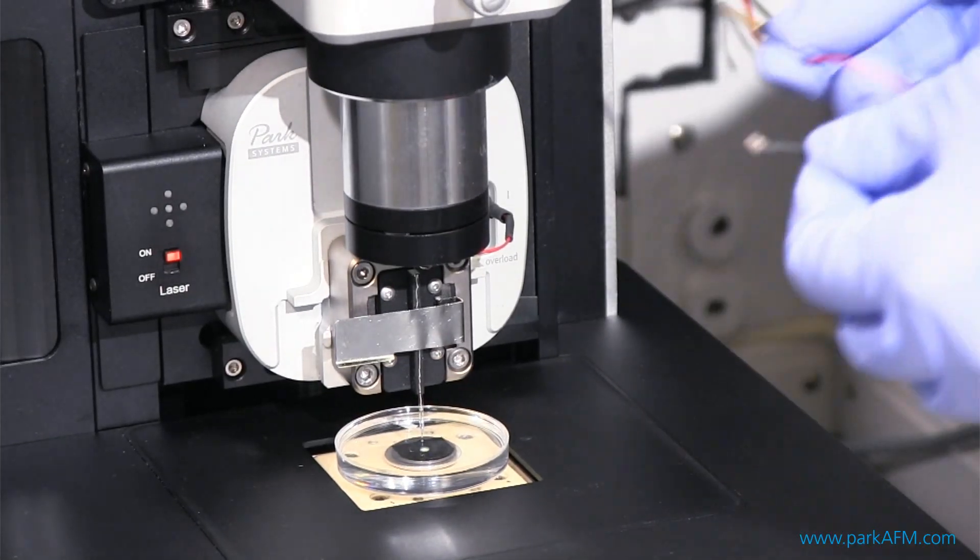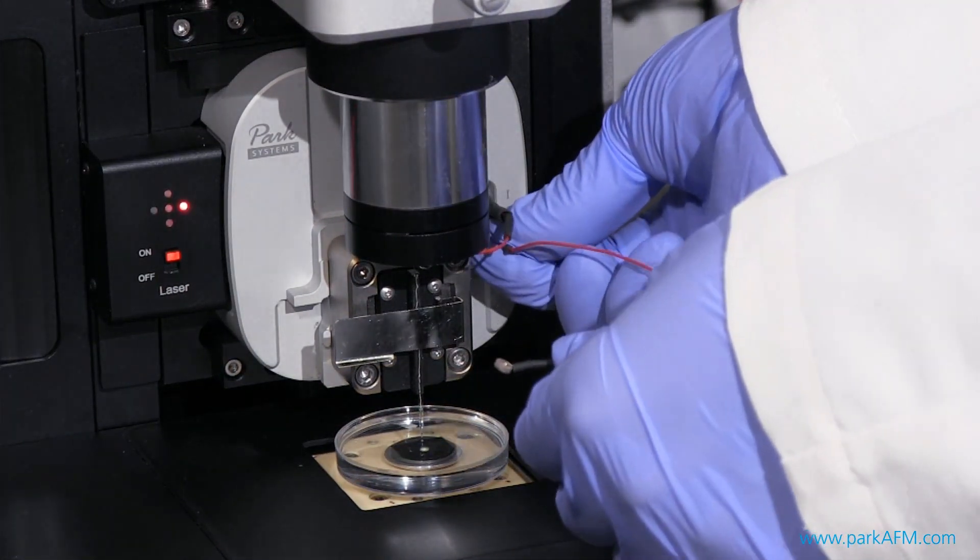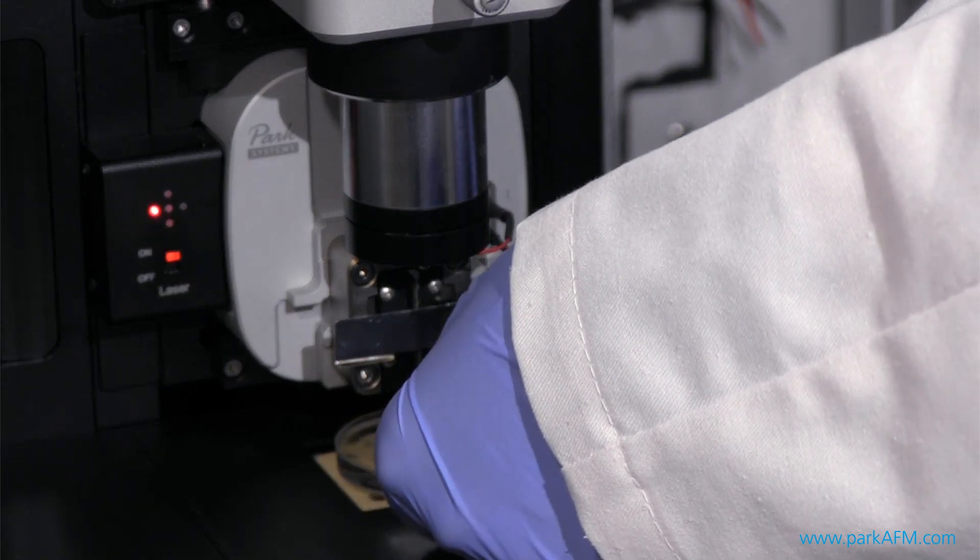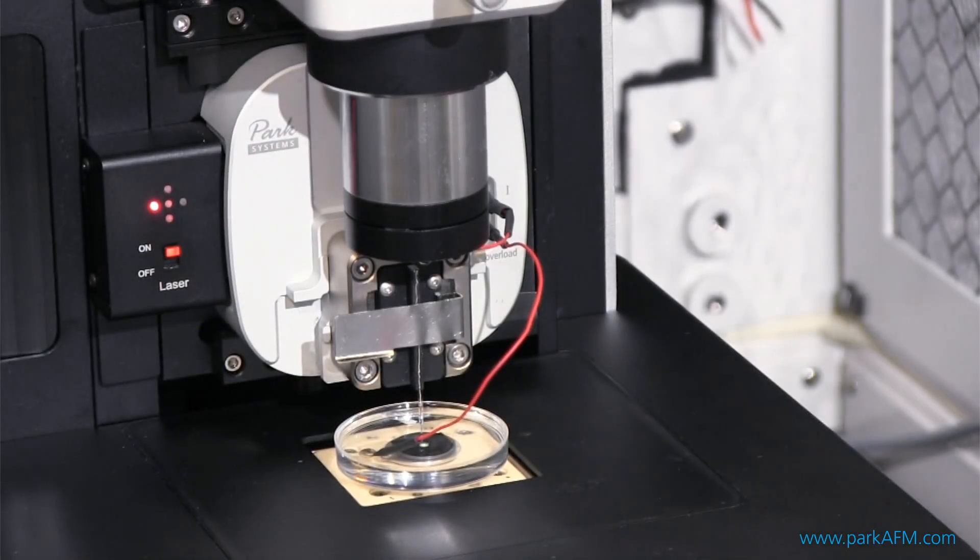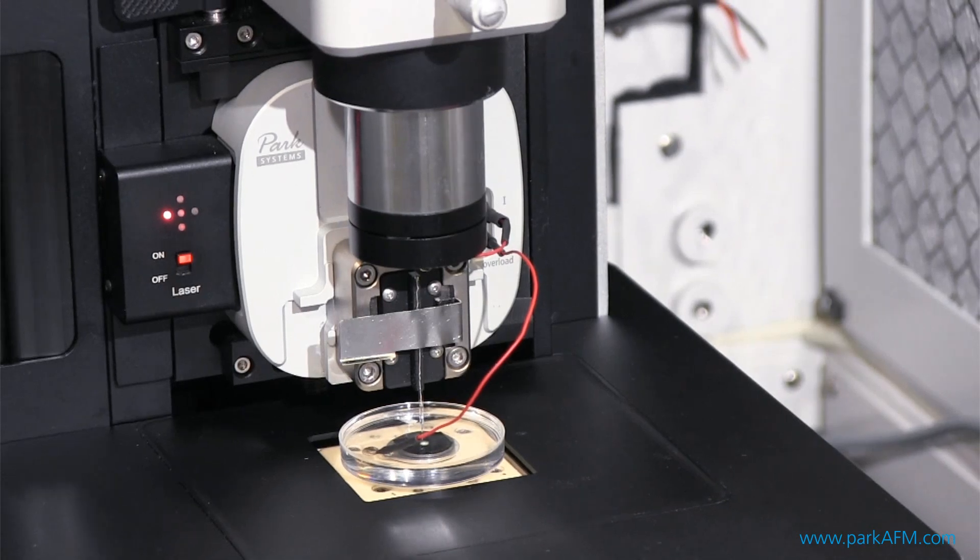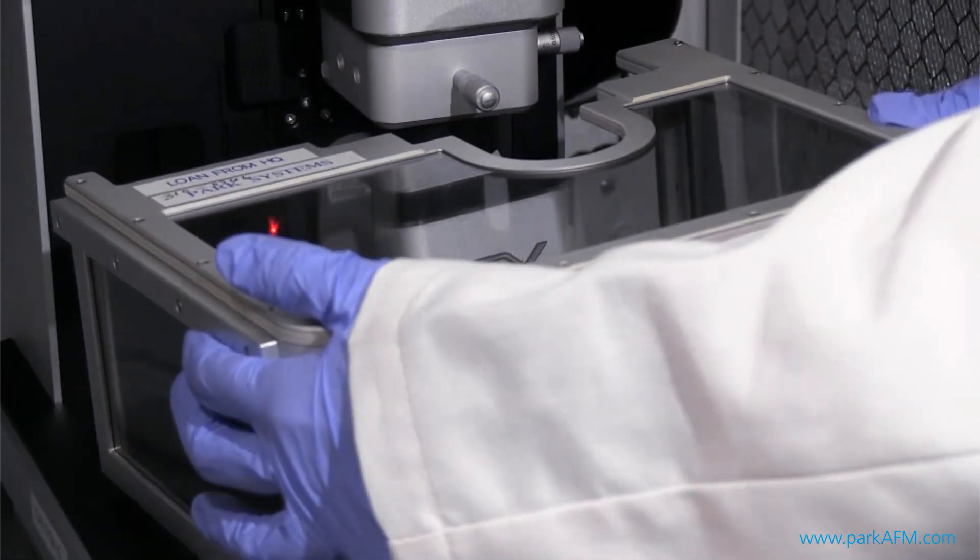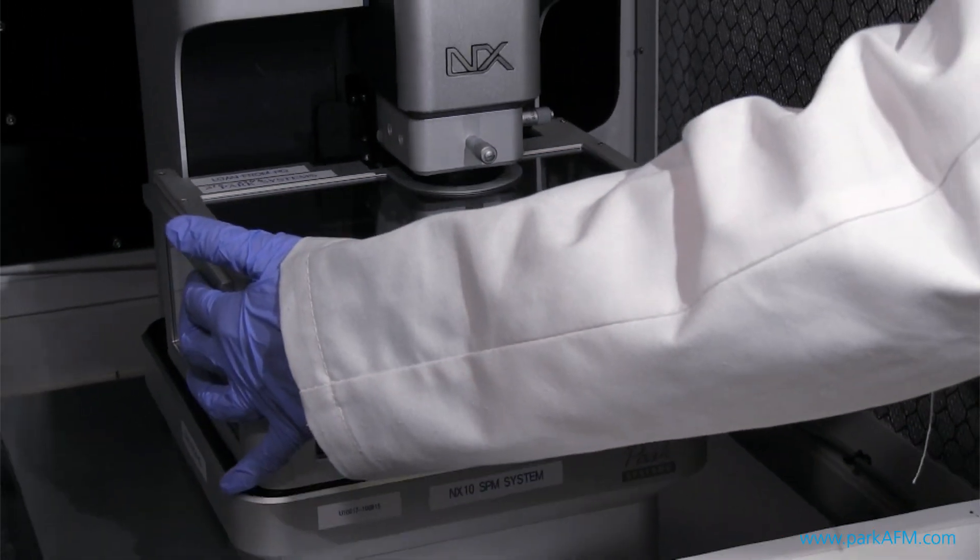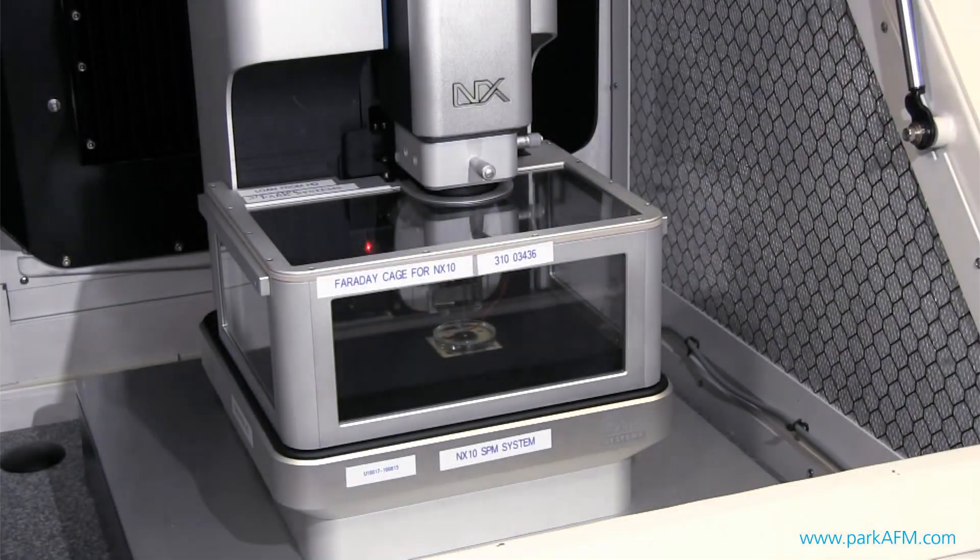Next, we connect the sample with the head using the bath electrode. Lastly, let's put the Faraday cage back in place to prevent electrostatic interference from affecting system performance.